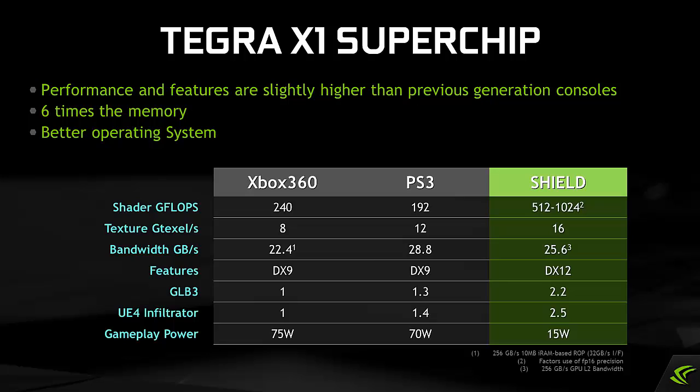For a start it has six times the memory. It's also running the Android operating system, which is superior to the operating systems found in previous generation consoles. If you look at this chart you can see that the Shield equals or exceeds both of the previous generation consoles in most measurable metrics.